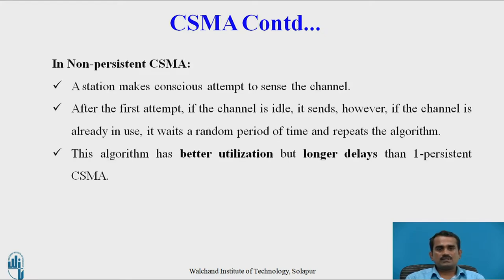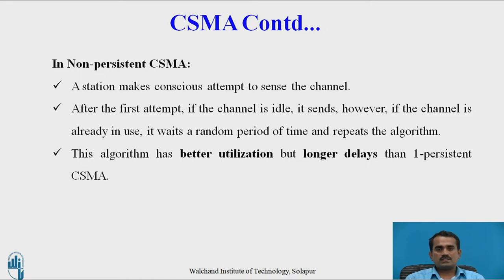Second one is Non-Persistent CSMA. In Non-Persistent CSMA, the user won't first send to check the next user — directly it can forward. That is, the station makes conscious attempts to sense the channel. After the first attempt, if the channel is idle, then only it sends. However, if the channel is already in use, it waits a random period of time and repeats the algorithm. This algorithm has better utilization but longer delays than One-Persistent CSMA.